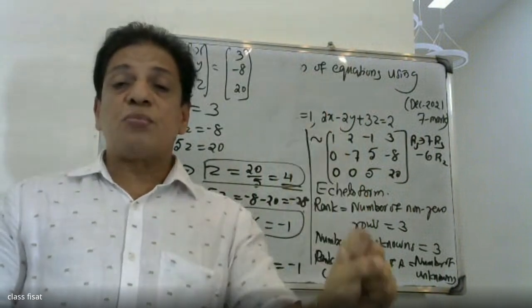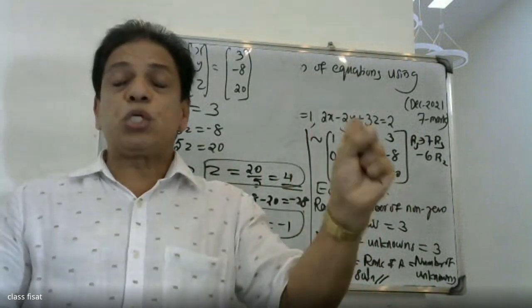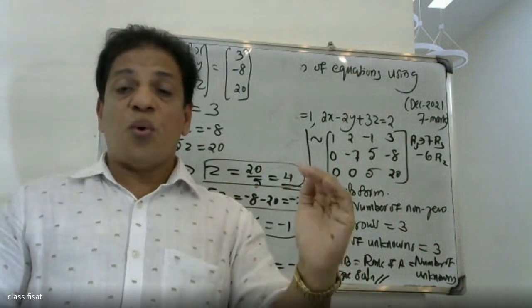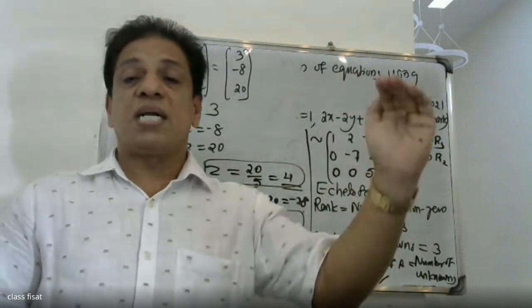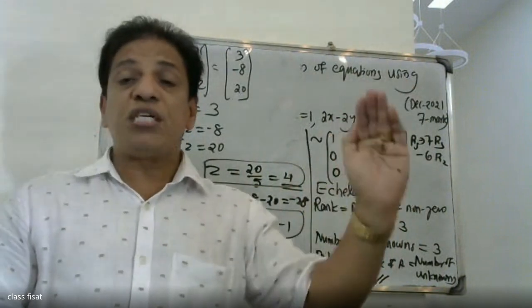The linear system of equations has a unique solution. So x, y, z are now determined. That is the Gaussian elimination method.